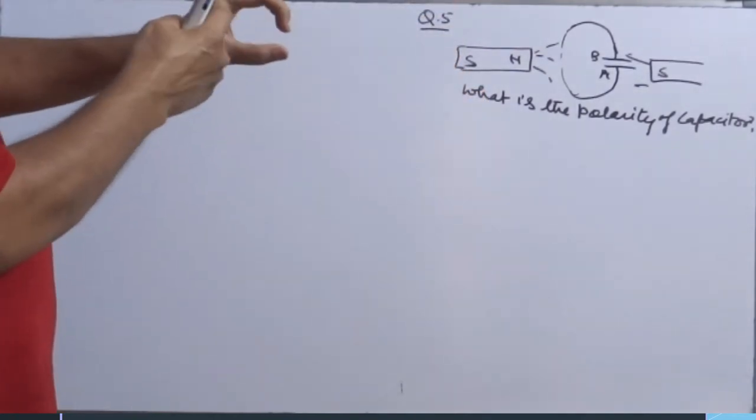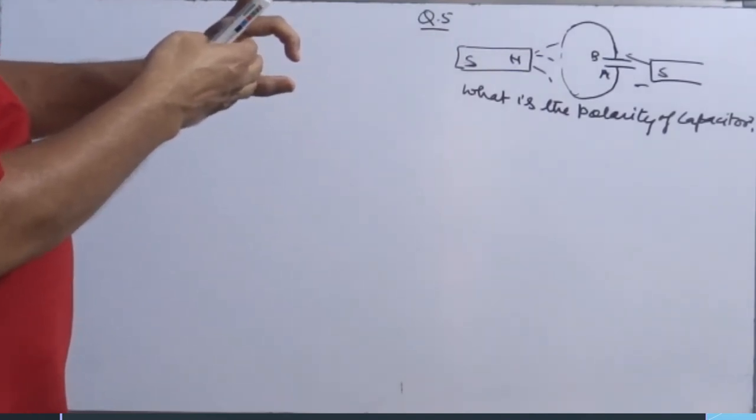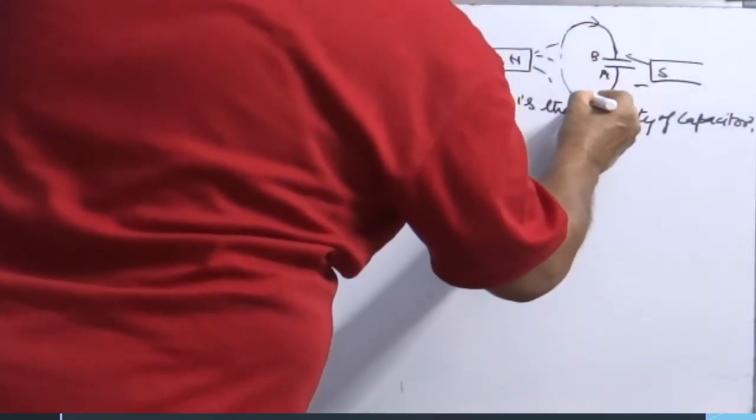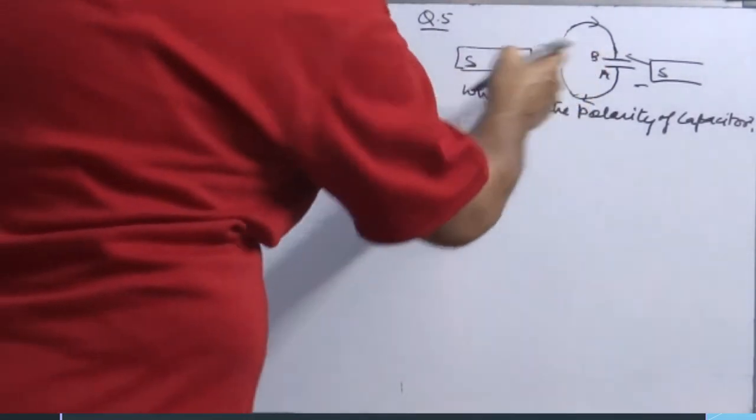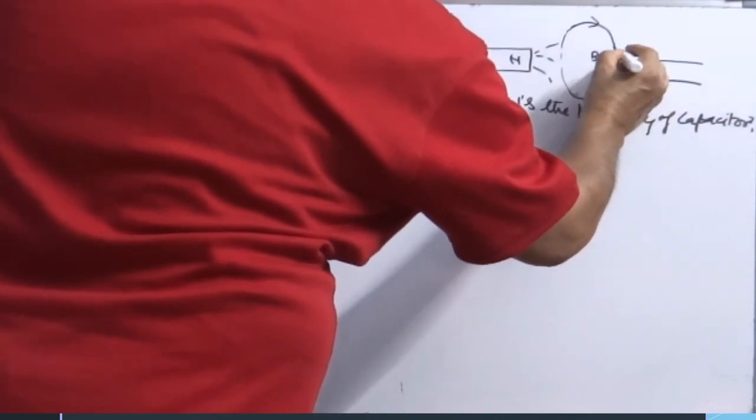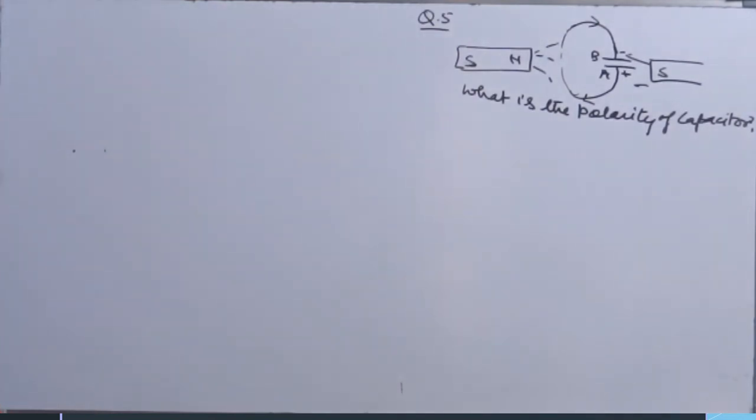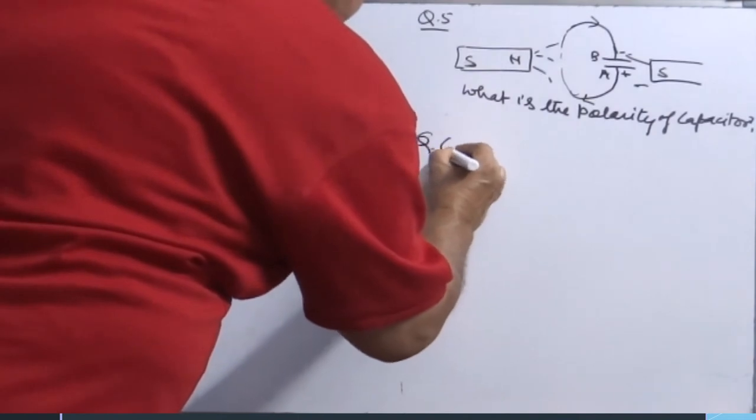So this pole will be formed south because south pole is brought closer to the loop. So the direction of current in the loop should be clockwise, but it won't appear because the circuit is broken. Then this current comes out from plate A and enters in plate B. So the polarity of plate A will be positive, polarity of plate B will be negative. Likewise, question 6 you can check.